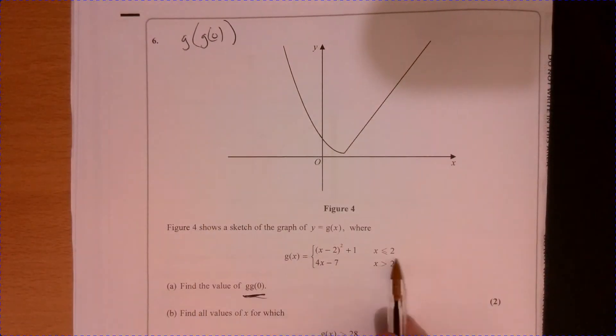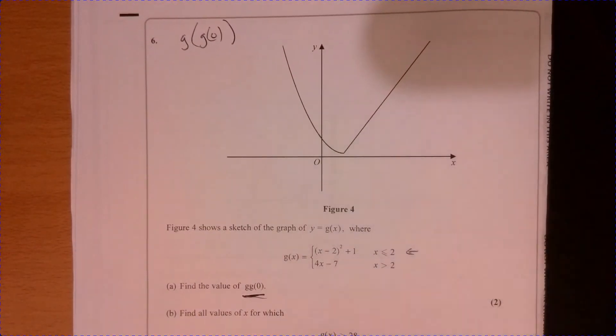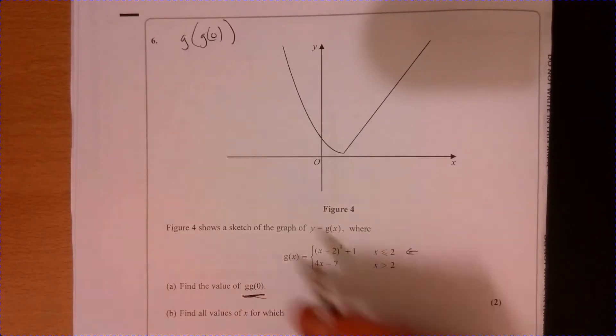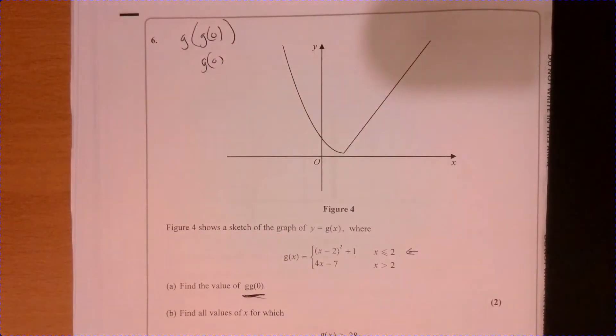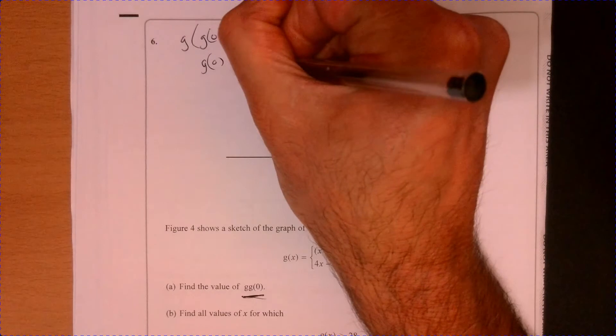We can work out g with zero as the input. So just following this through, that means we're going to input zero into this here. So g(0) means zero minus two squared plus one. So that's going to equal five.